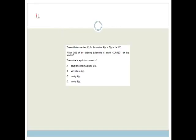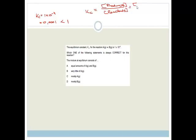This question says the equilibrium constant Kc for this reaction is 1×10⁻⁴. That's 0.0001, which is smaller than 1. Why is that important? Because Kc is equal to the ratio of the concentration of the products over the concentration of the reactants at equilibrium — in this case, the concentration of B over the concentration of A. This tells us we have less of B than A, meaning the equilibrium is lying towards A, or the reactants, or to the left. In other words, we've got more of A.